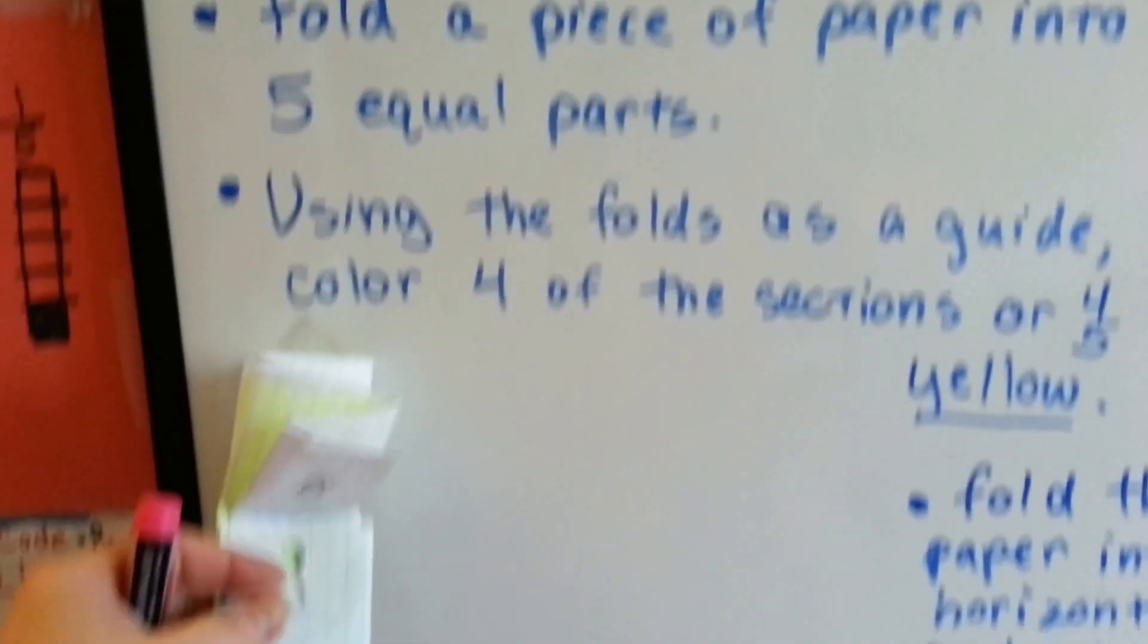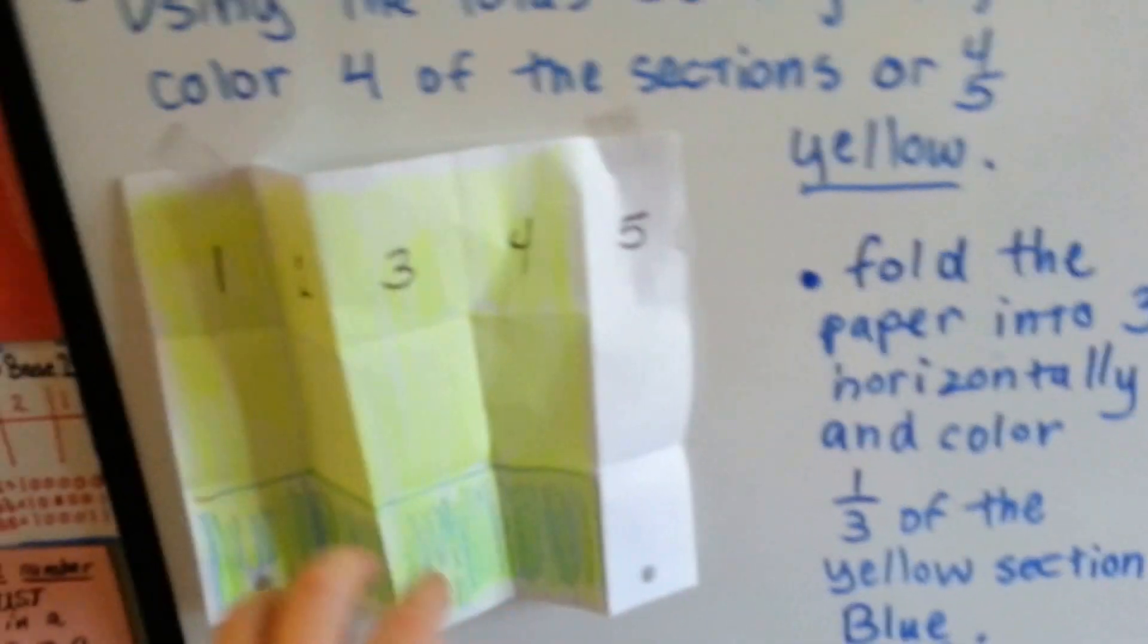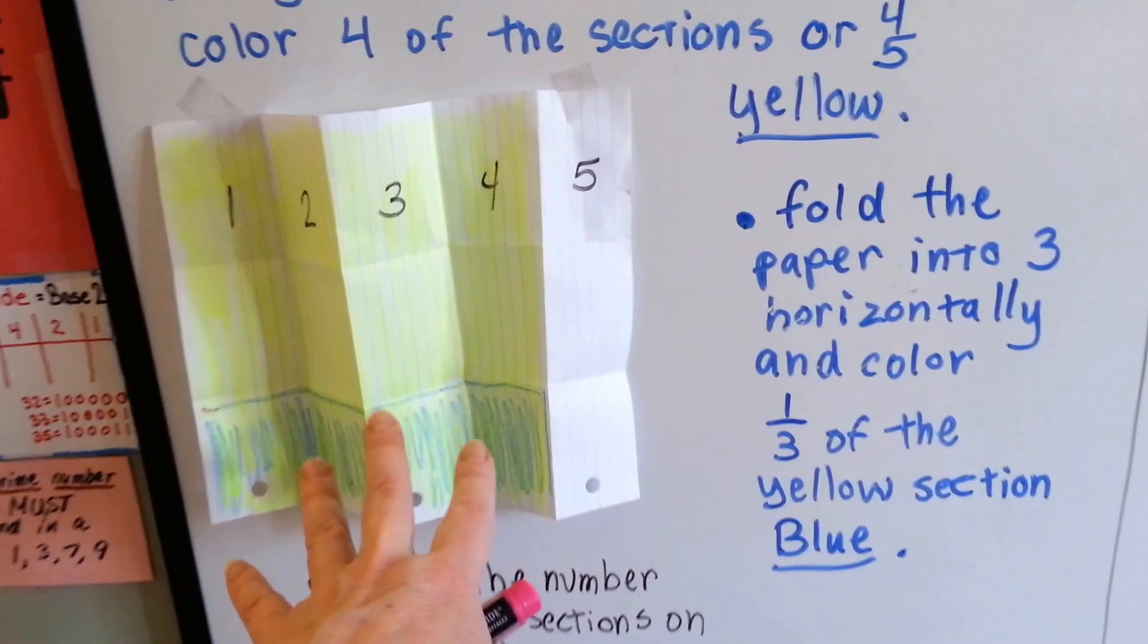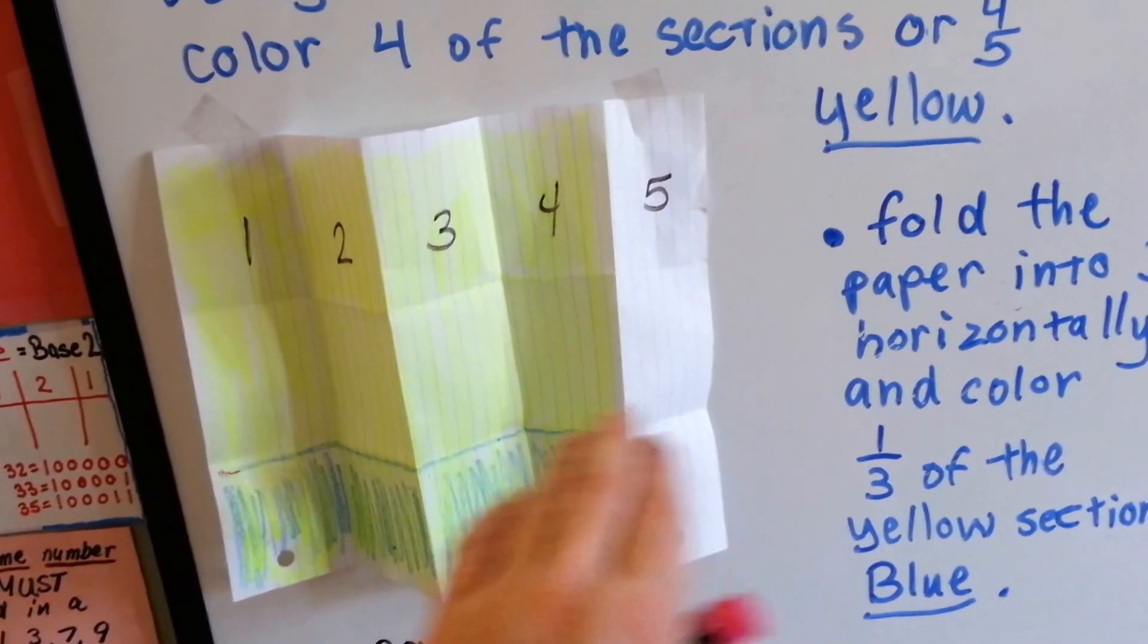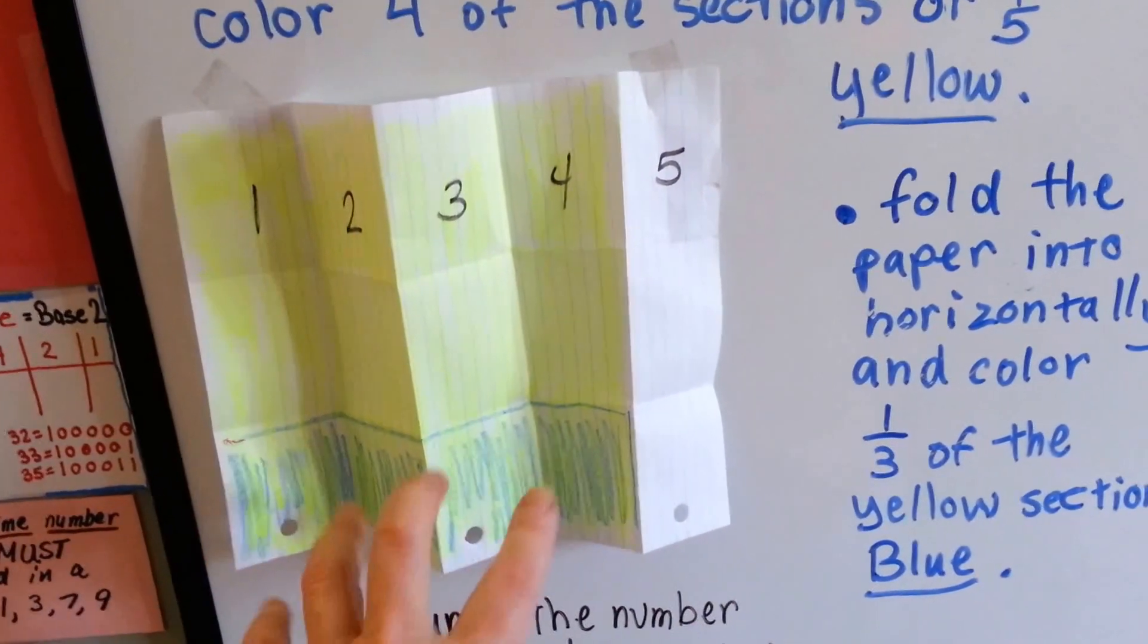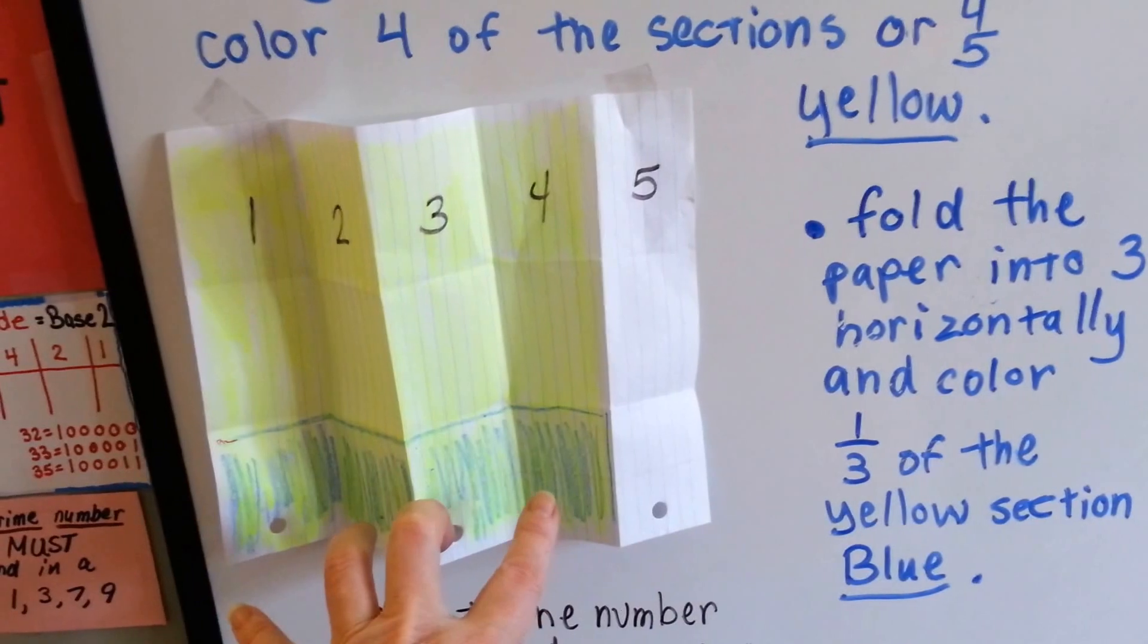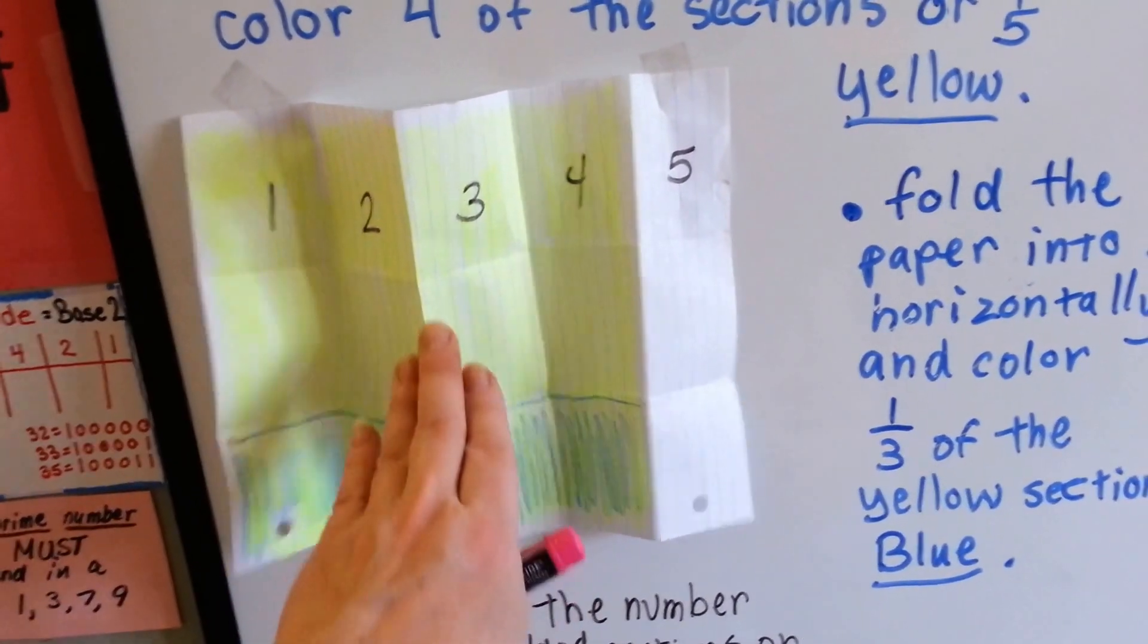Because I'm trying to find 1 third of the 4 fifths. So now I had all these nice folds. I had 4 fifths of it colored yellow, and then I took 1 third of this part down here. Because I folded in 1 third of the part that I colored yellow. So I first colored in 4 fifths, then I colored in 1 third of the 4 fifths part.